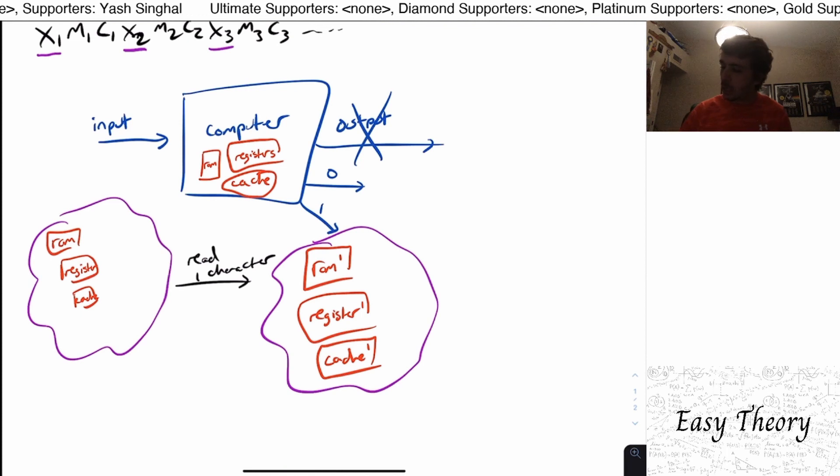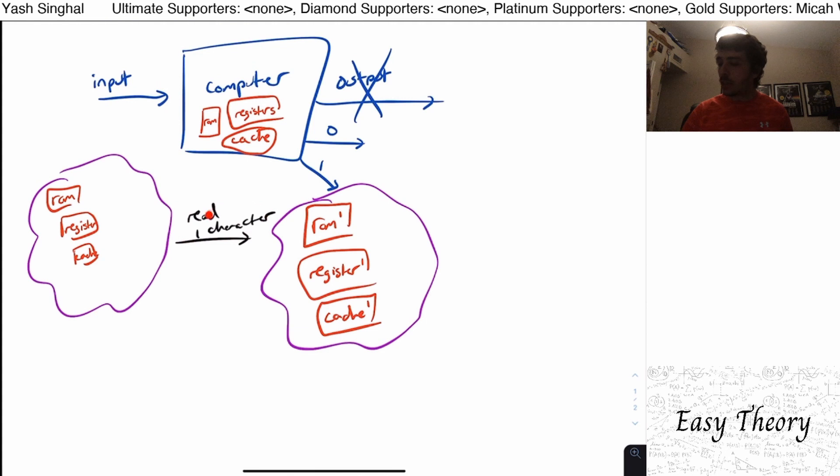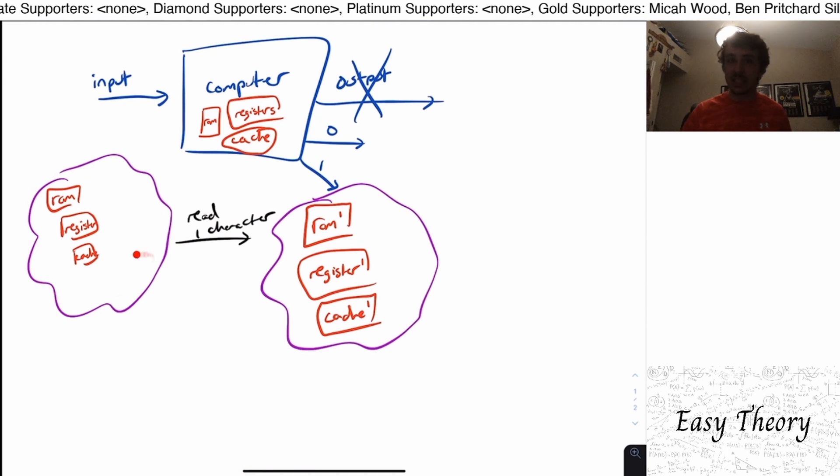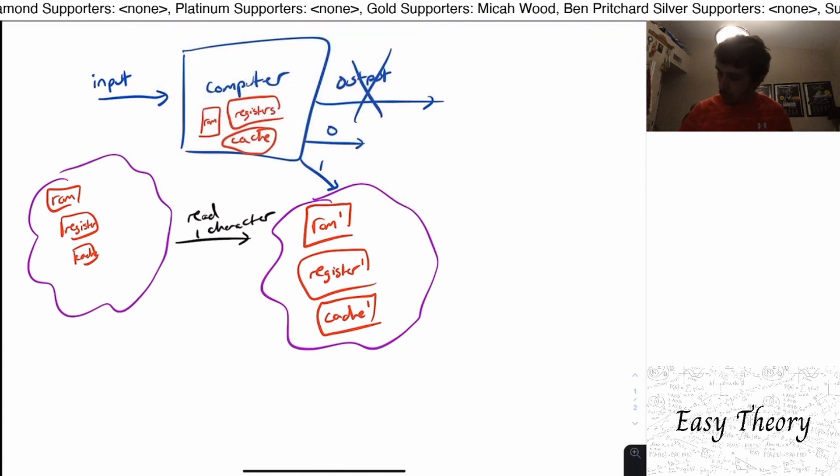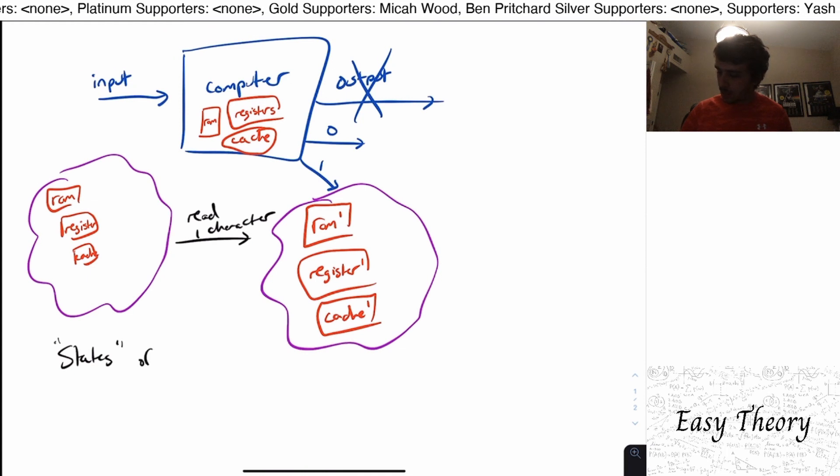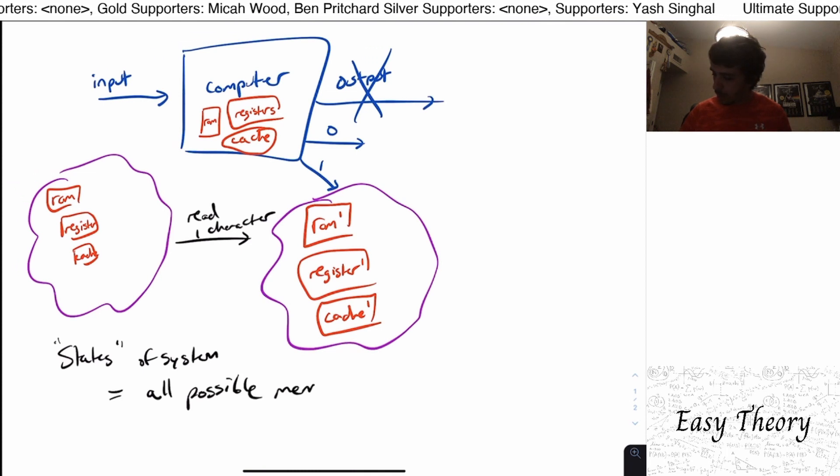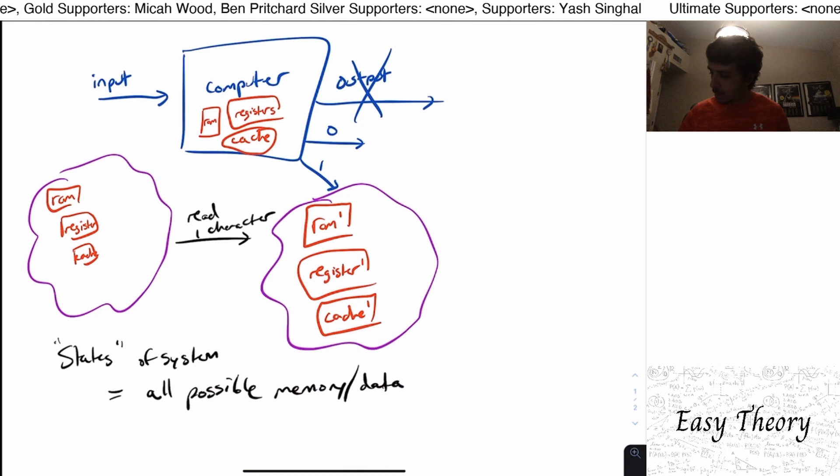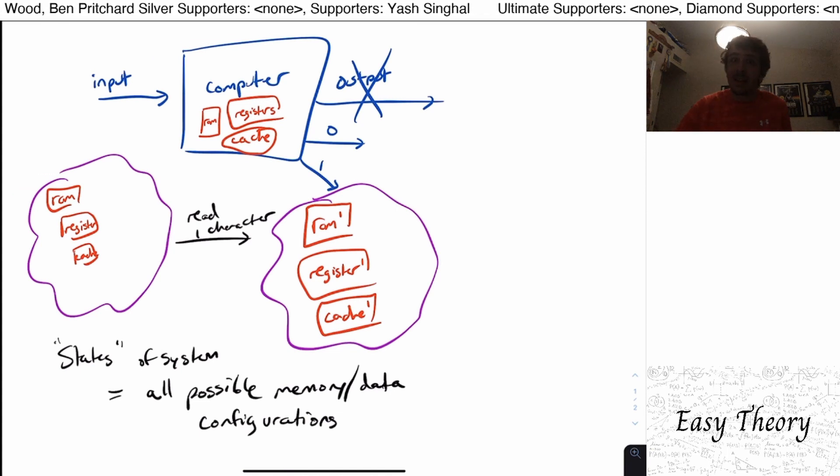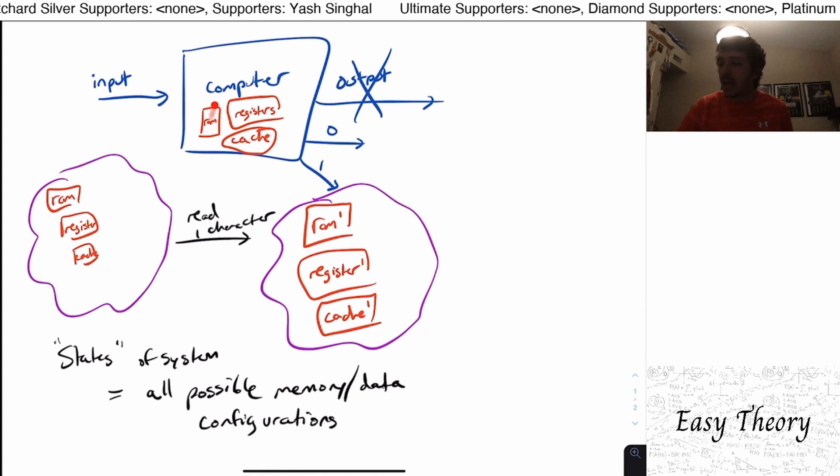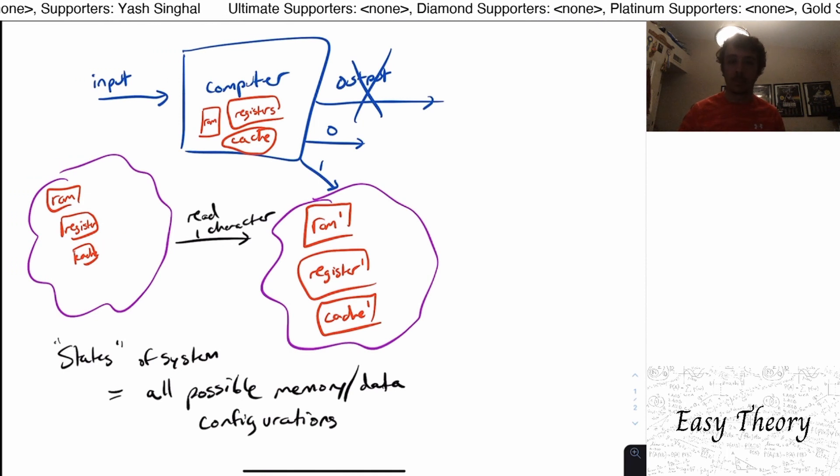So what we're really doing here is we're looking at each of the characters of the input string and mapping the states of the system of this computer to another possible state of the system. So we can think of the state of the system to be all possible memory or data configurations of the computer. So unless we knew anything about this particular computer, we might as well assume that every possible RAM contents are possible, every register contents are possible, and every cache contents are possible.